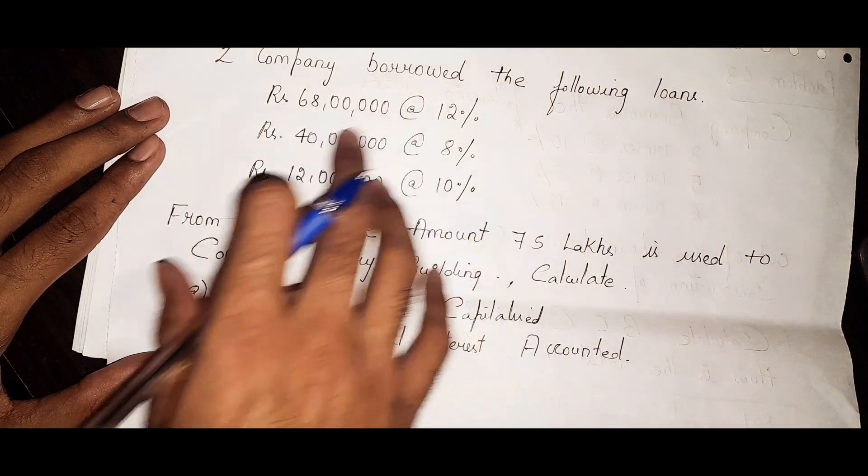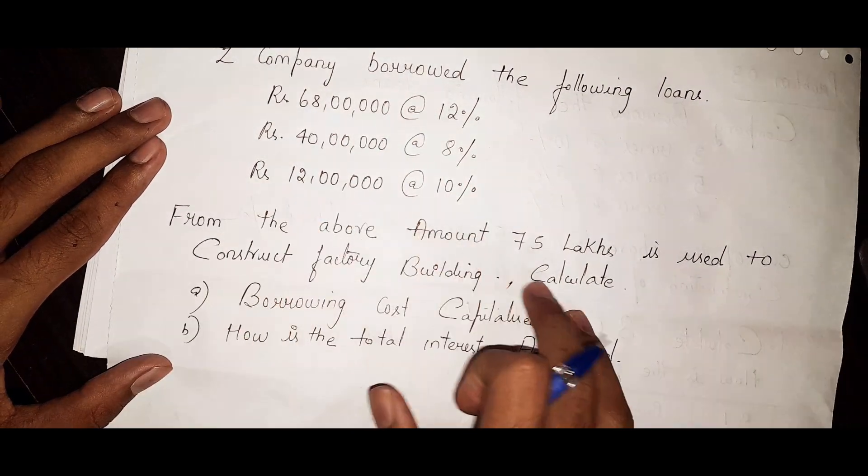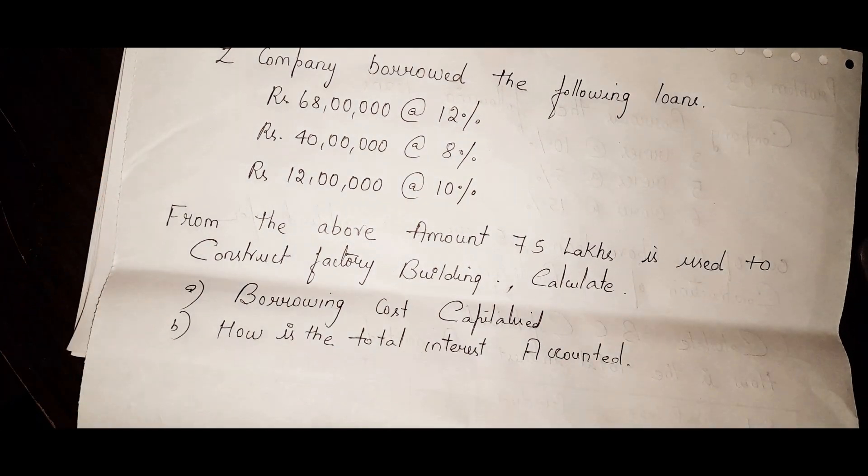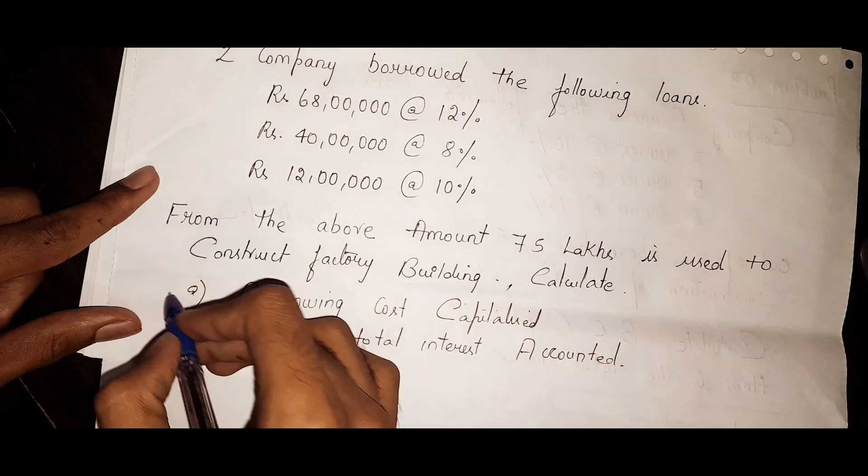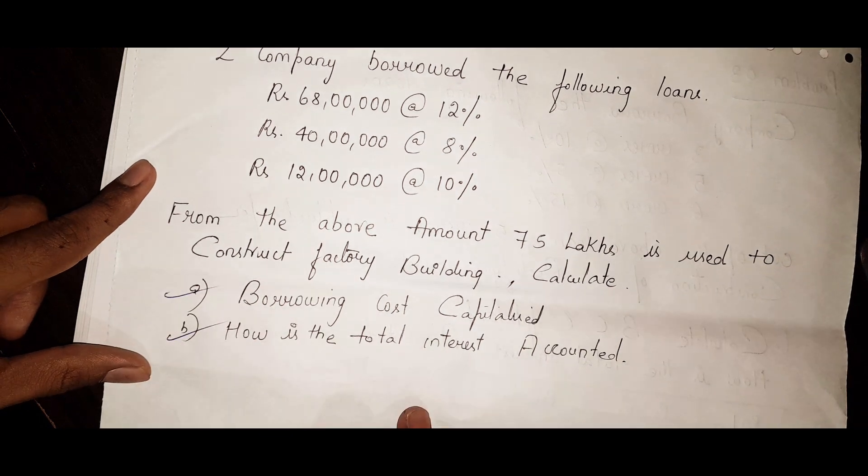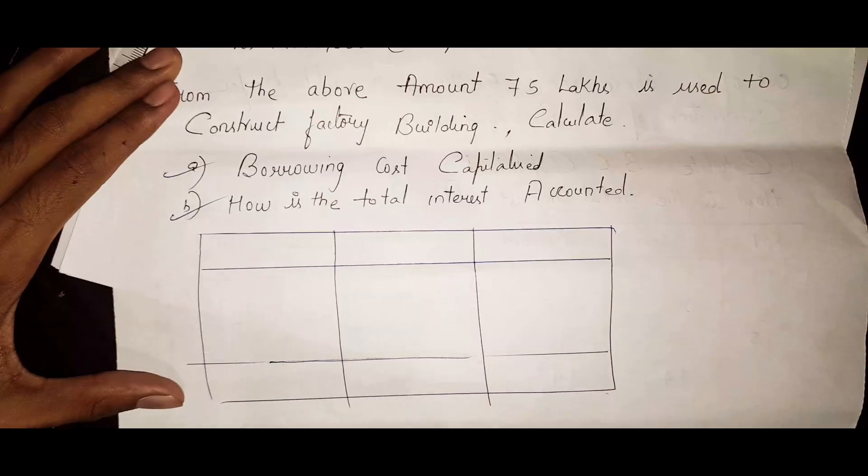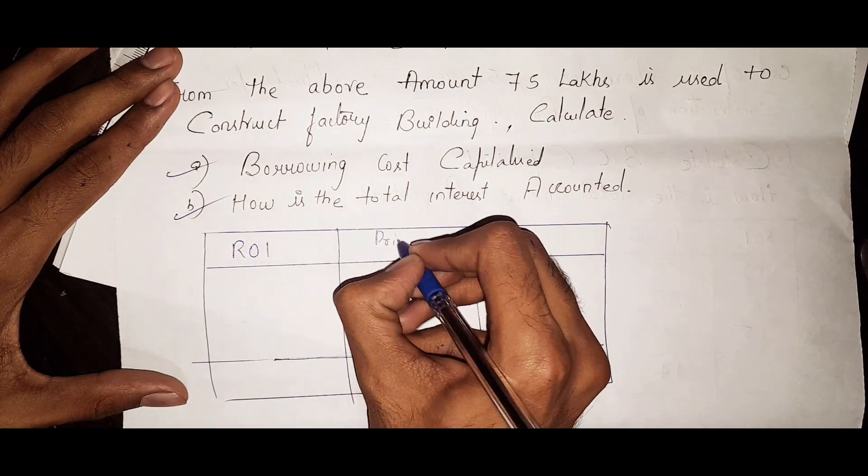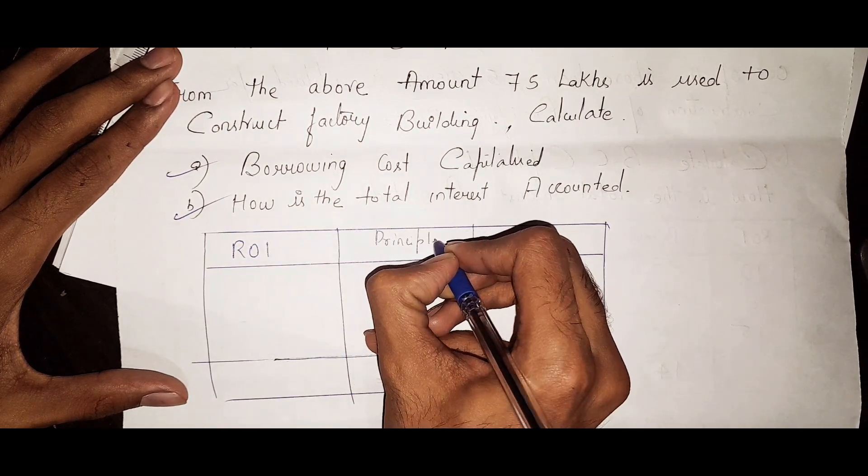They have given 68 lakhs, 40 lakhs, and 12 lakh loans, but out of which only 75 lakhs is used to construct the factory. We have to calculate the borrowing cost as well as how the total interest is accounted. Take three columns: first will be rate of interest, second one will be principal amount, and third one will be product.